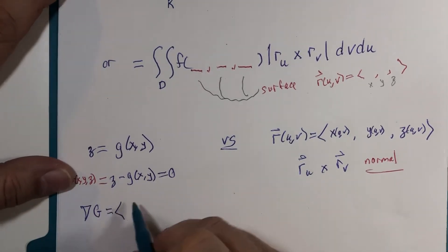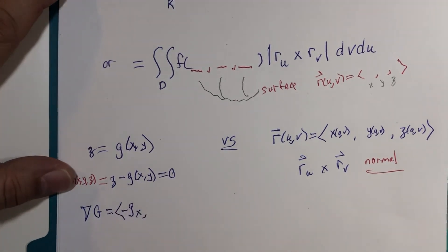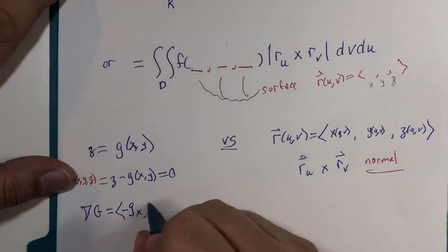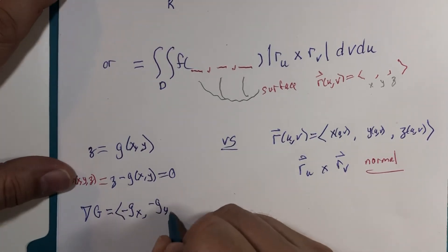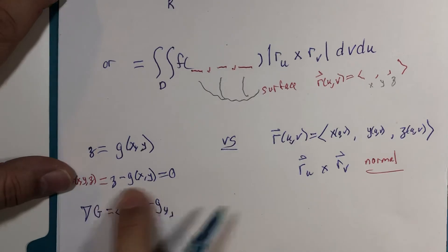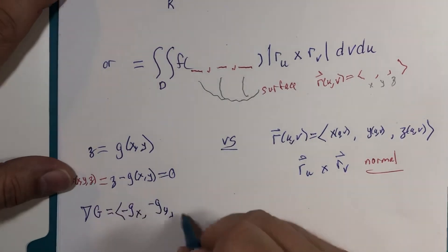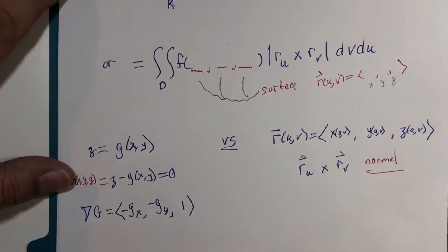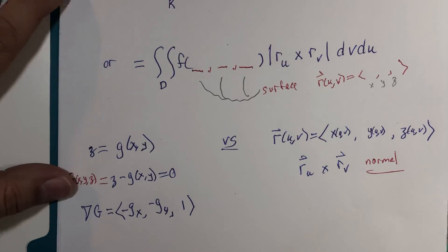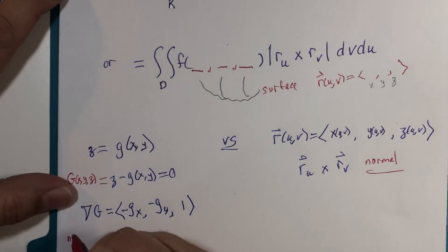The x partial derivative, that's 0. So it's negative g with respect to x. The y partial derivative, that's 0. It's a negative g with respect to y. And the z partial derivative of this is 1. That will become useful, not in this segment, but soon. So this also was a normal vector.